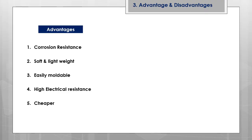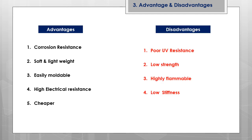The advantages of LDPE include high chemical resistance, high corrosion resistance, being soft and lightweight, easily moldable, high electrical resistance, and being very cheap. The disadvantages include poor UV resistance, low strength because it is a soft material, being highly flammable, and having low stiffness.